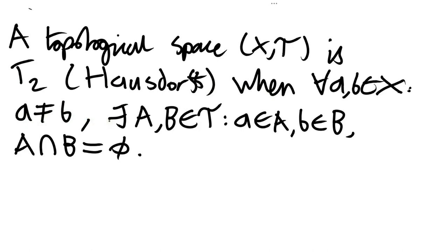Specifically, one of the points belongs to A and one of the points belongs to B, and capital A and capital B do not intersect — their intersection is empty.